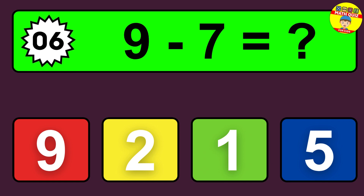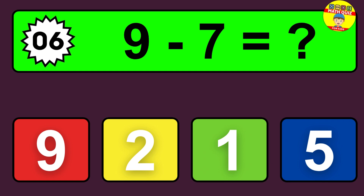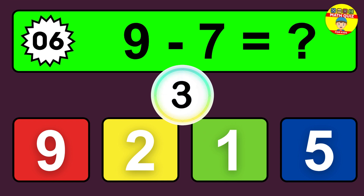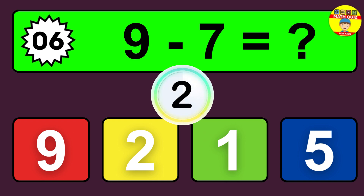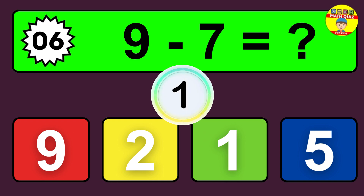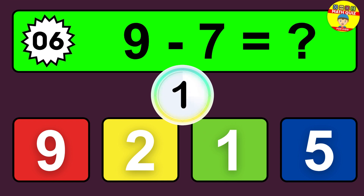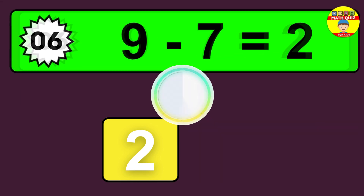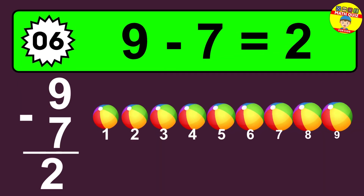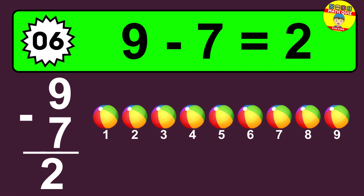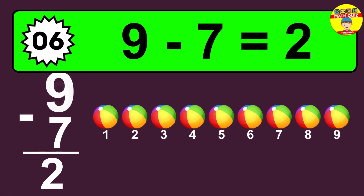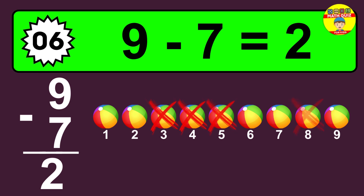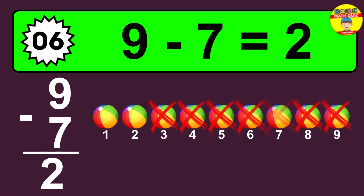Question 6. 9 minus 7 equals what? So the answer is 9 minus 7 is 2. Let's count it. 1, 2.